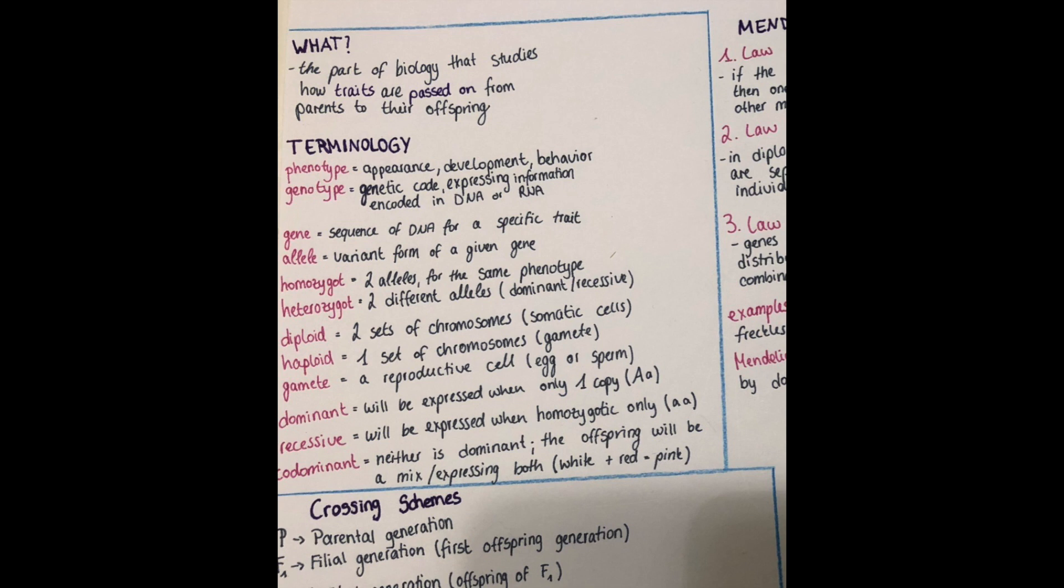So phenotype and genotype are two of the words that are frequently used in genetics. Phenotype is everything that covers appearance, development and behavior. So for example when a mom says to her child, oh wow you're as stubborn as your father, then that's a phenotype. Something that's expressed. Or for example when someone says, oh you have the beautiful eyes of your mother, that's again a phenotype.